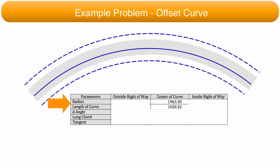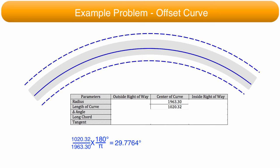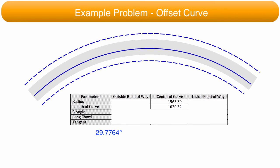Two parameters of a horizontal curve are necessary to calculate all the remaining parameters. In this case, the radius and arc length are now known. Previously, an equation was given to calculate the arc length from the delta angle and radius. The equation can be manipulated so that the arc length and radius can be inserted to derive the delta angle. The answer for the delta angle is in degrees and decimal parts of a degree, which is then converted into degrees, minutes, and seconds.